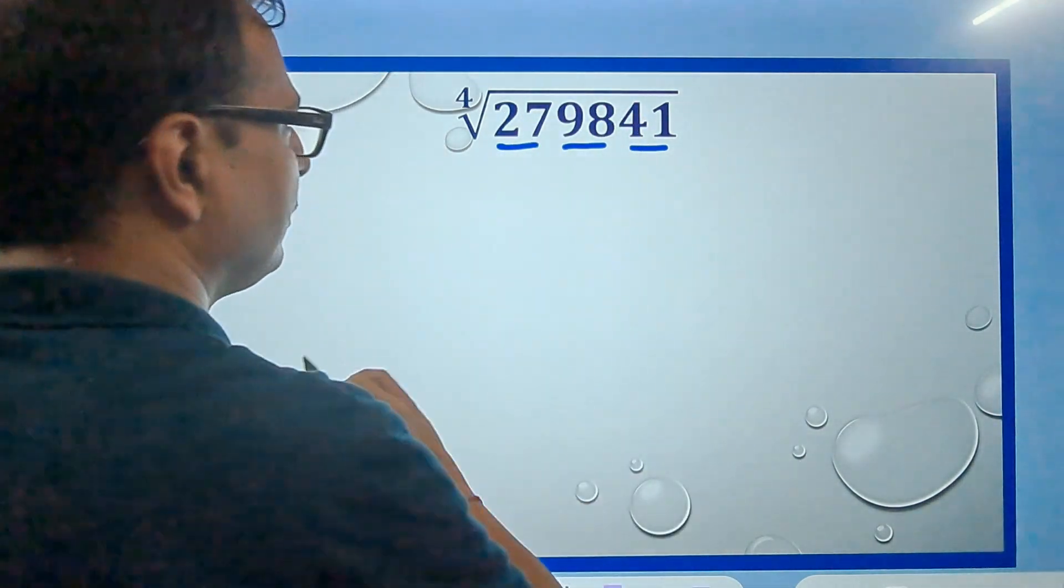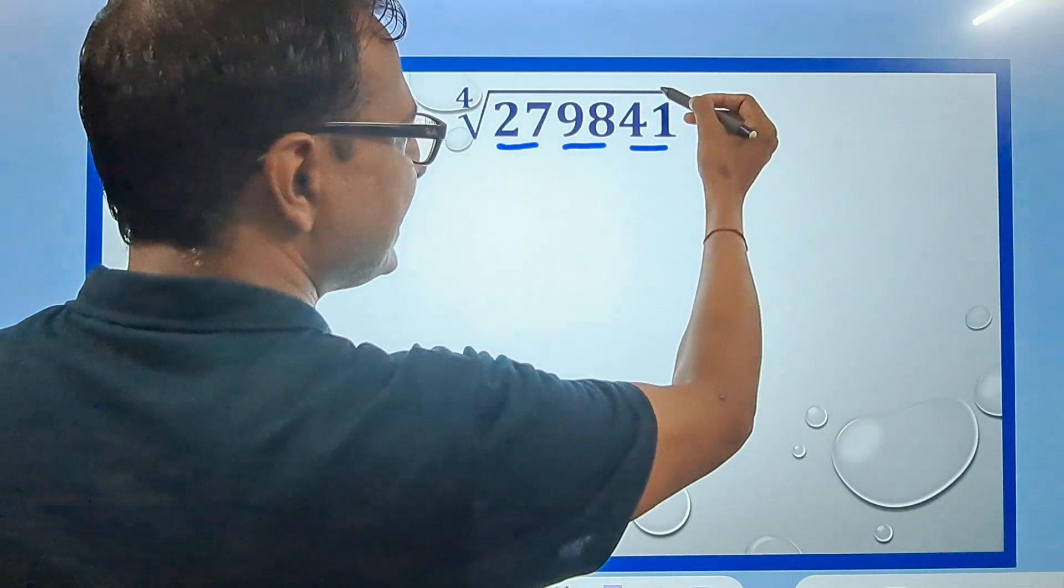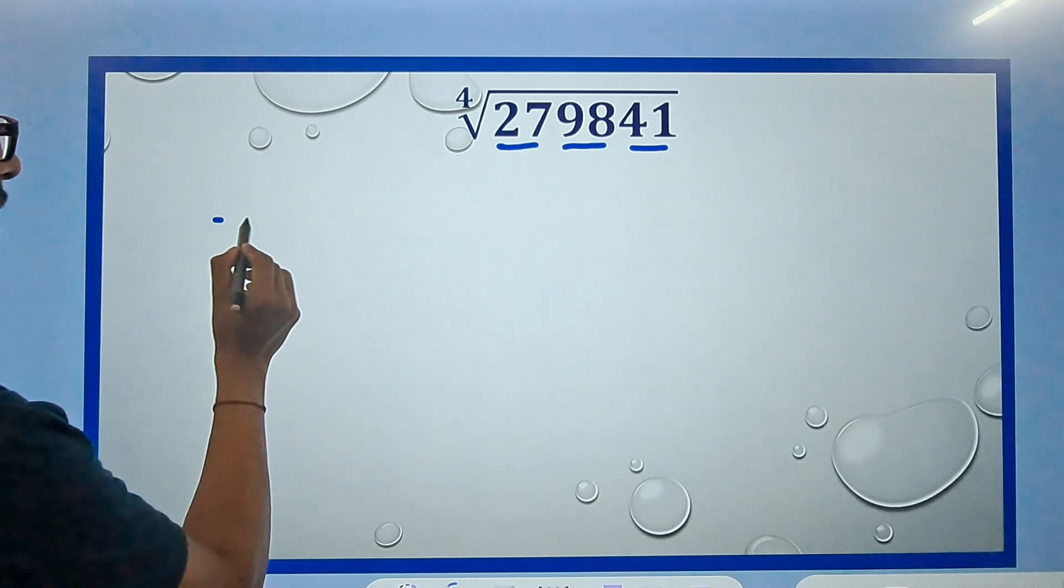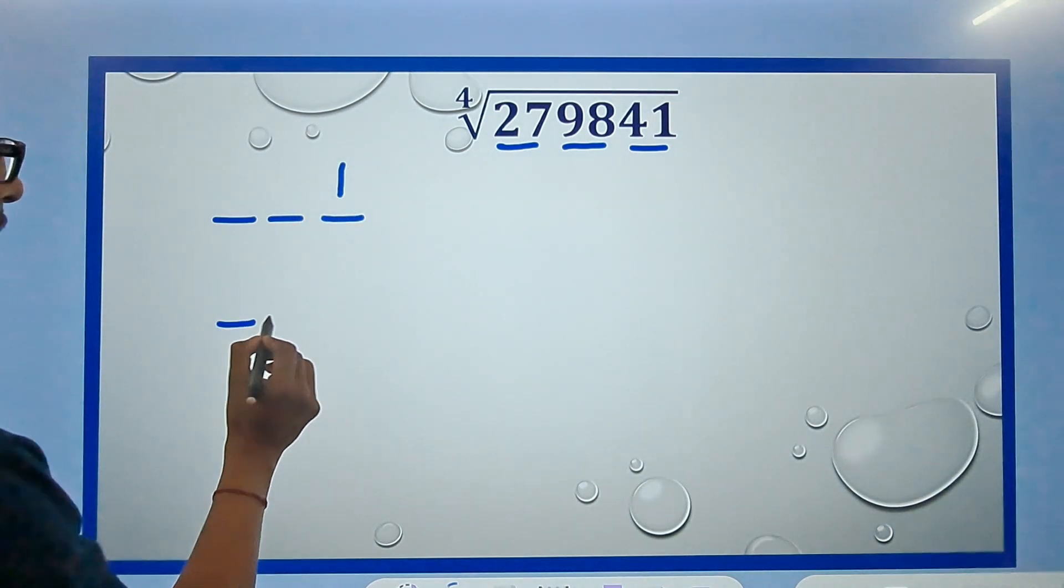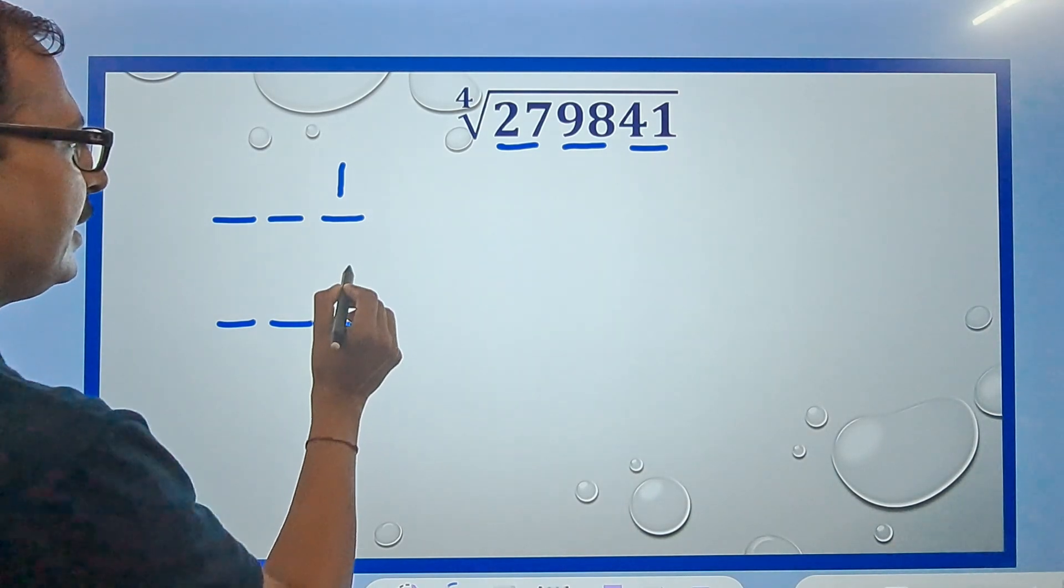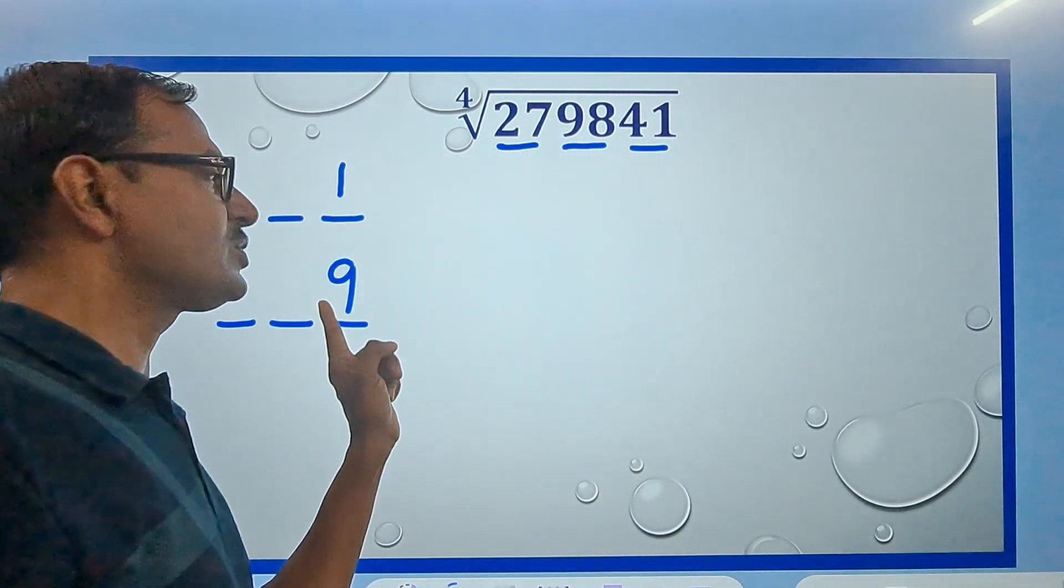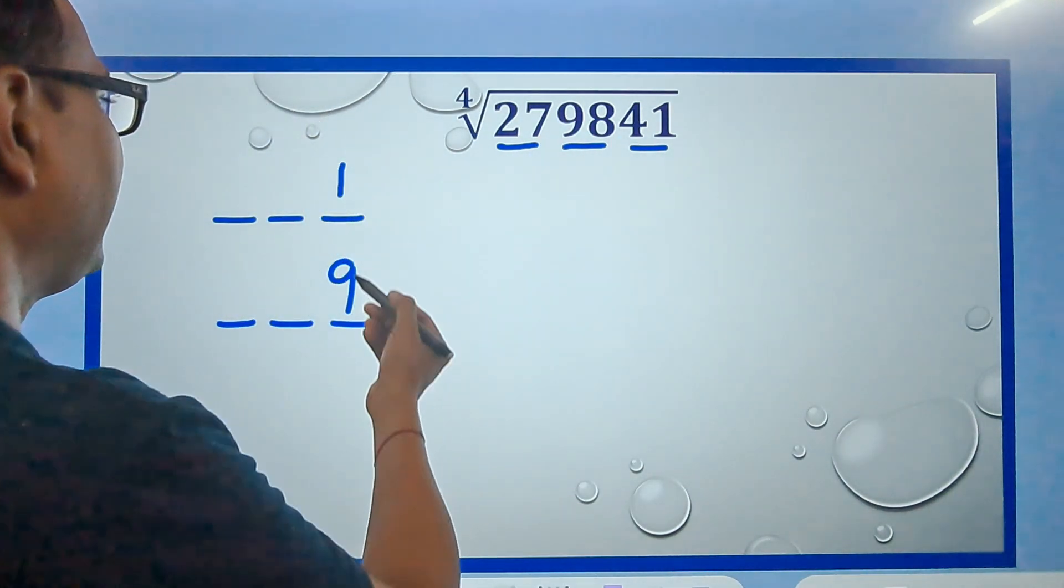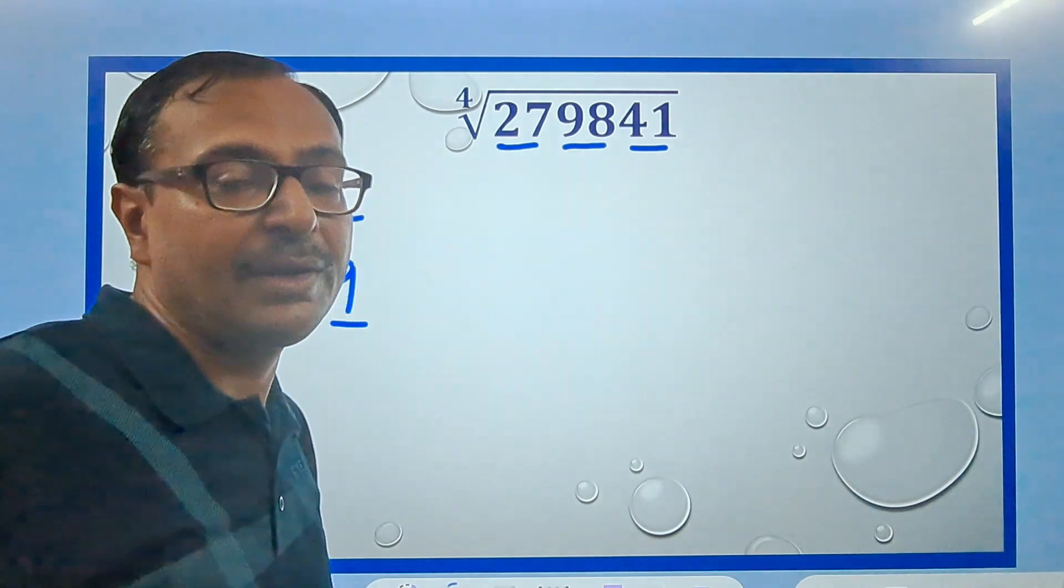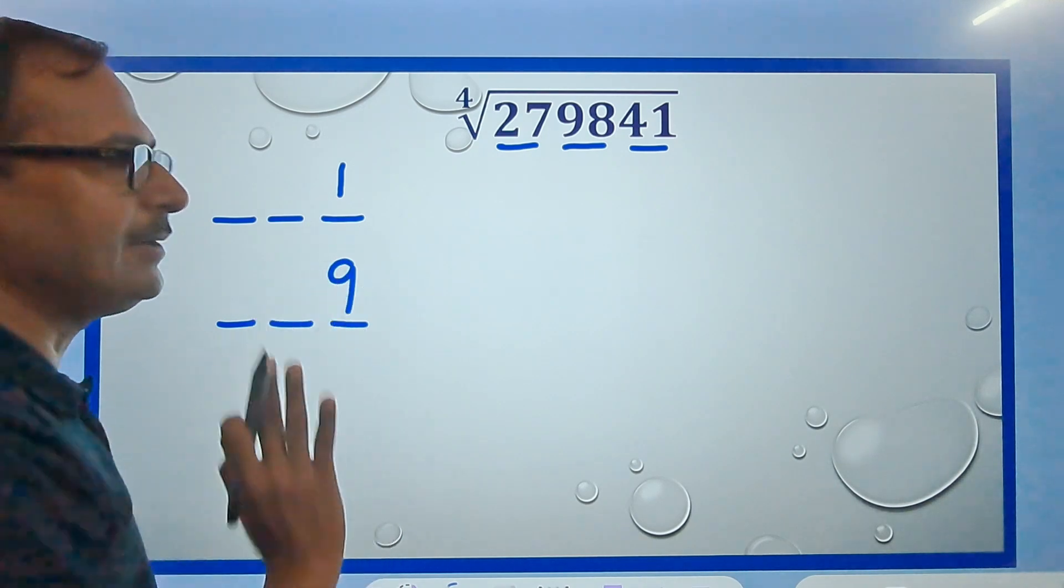So to find that number, the last pair here is 41 that ends in 1. So my answer is going to end in 1 or it has to end in 9. Why? Because 1 square is 1 and 9 square is 81 that ends in 1. Apart from 1 and 9 the square of any single-digit number will not end in 1.